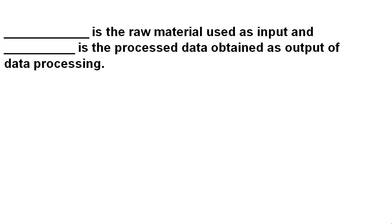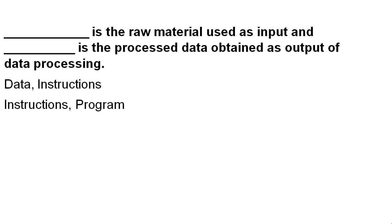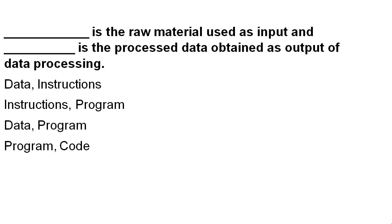Dash is the raw material used as input and dash is the processed data obtained as output of data processing. Options are: Data and Instructions, Instructions and Programs, Data and Program, or Program and Code. The correct option is Data and Instructions.